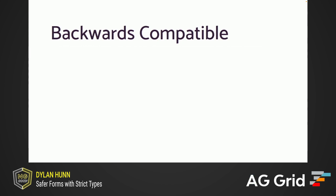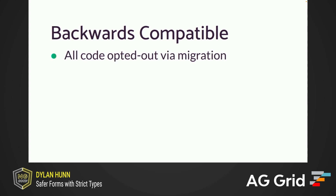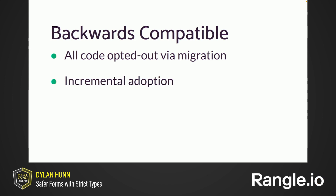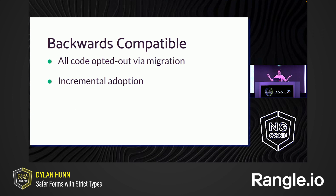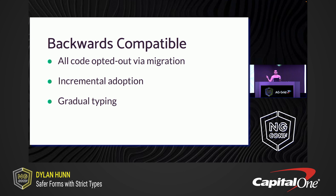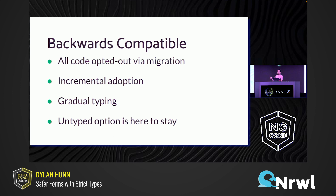Although this is a big change, it's 100% backwards compatible. All forms code will be opted out using an automatic migration — every usage of a forms class like form group or form array will be replaced with a corresponding untyped class. This migration is super robust; we actually ran it against all Angular projects at Google. Users can adopt the types one control at a time, totally incrementally. We also support gradual typing — you could have untyped controls inside of typed groups, or vice versa. And the untyped option is not going anywhere; it's actually necessary in some cases.